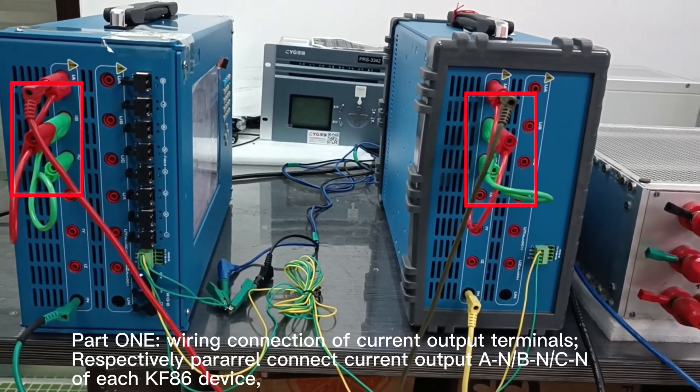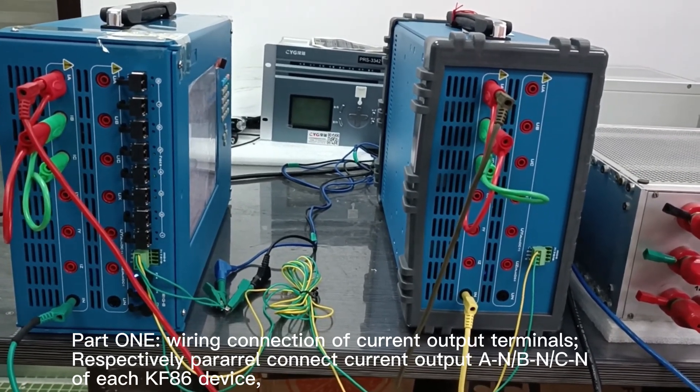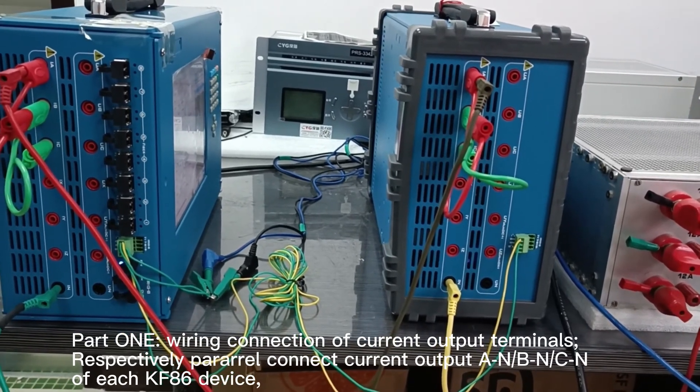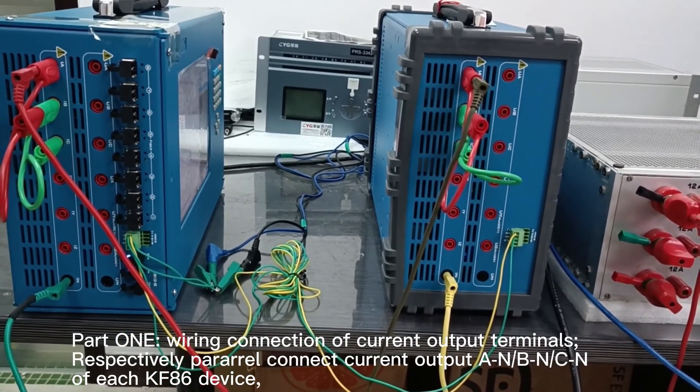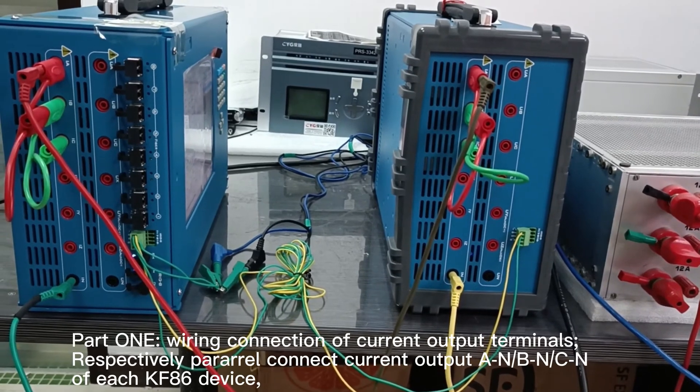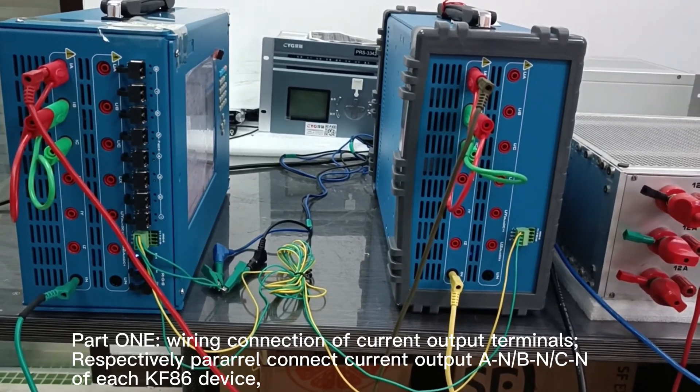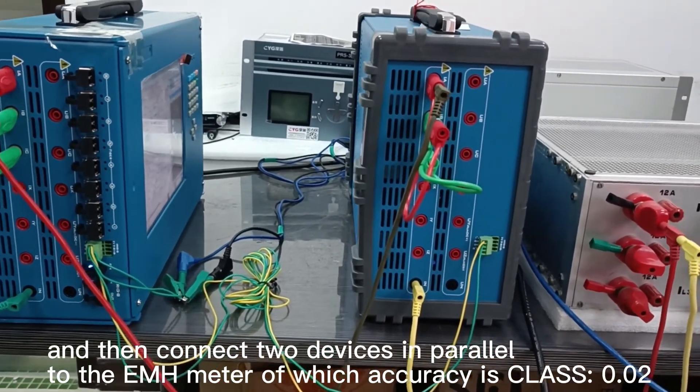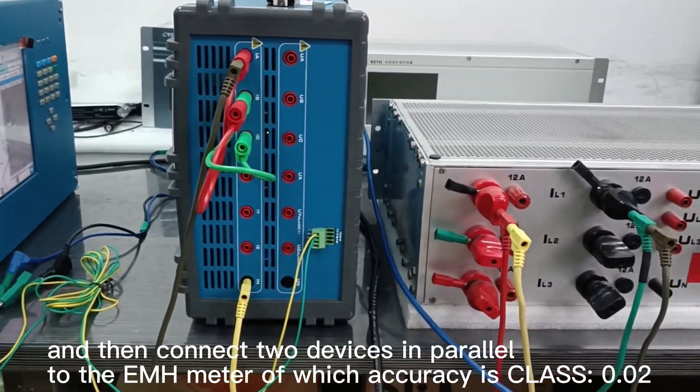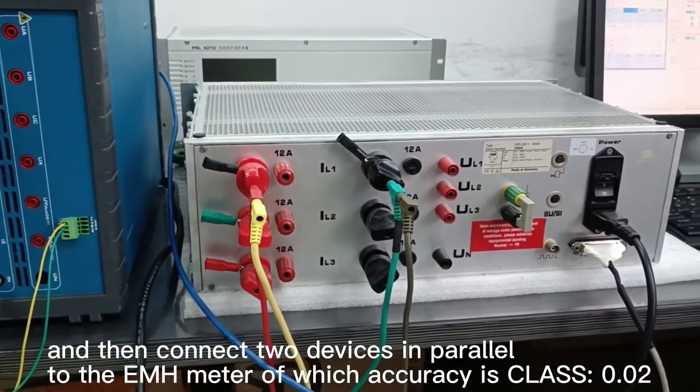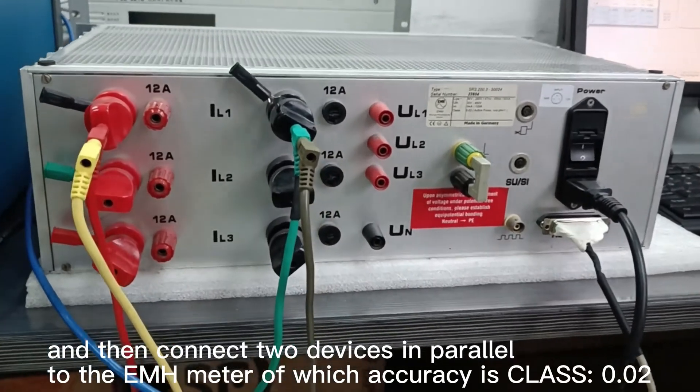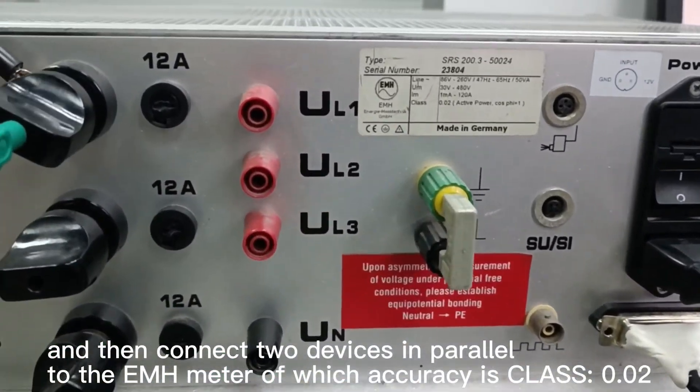Respectively, parallel connect current output A to neutral, B to neutral, C to neutral of each KF86 device, and then connect the two devices in parallel to the EMH meter which has accuracy class 0.02.